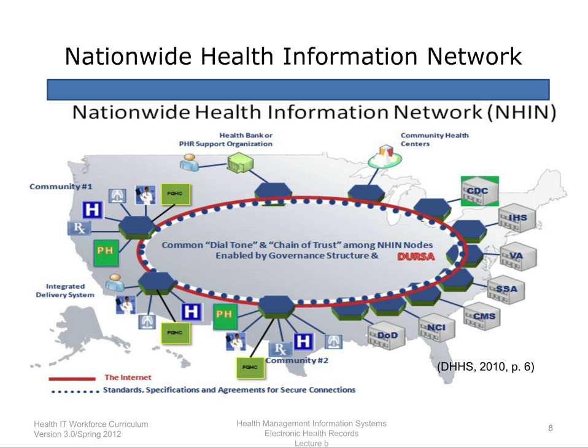The image is entitled Nationwide Health Information Network (NHIN) and consists of a map of the United States with two rings. The red outer ring is labeled the Internet, and the blue dotted inner ring is labeled Standards, Specifications, and Agreements for Secure Connections. Outside the rings, starting in the upper left corner going counter-clockwise, are labels including Community 1: integrated delivery system; Community 2: various federal agencies; community health centers; and health bank or personal health record or PHR support organization.